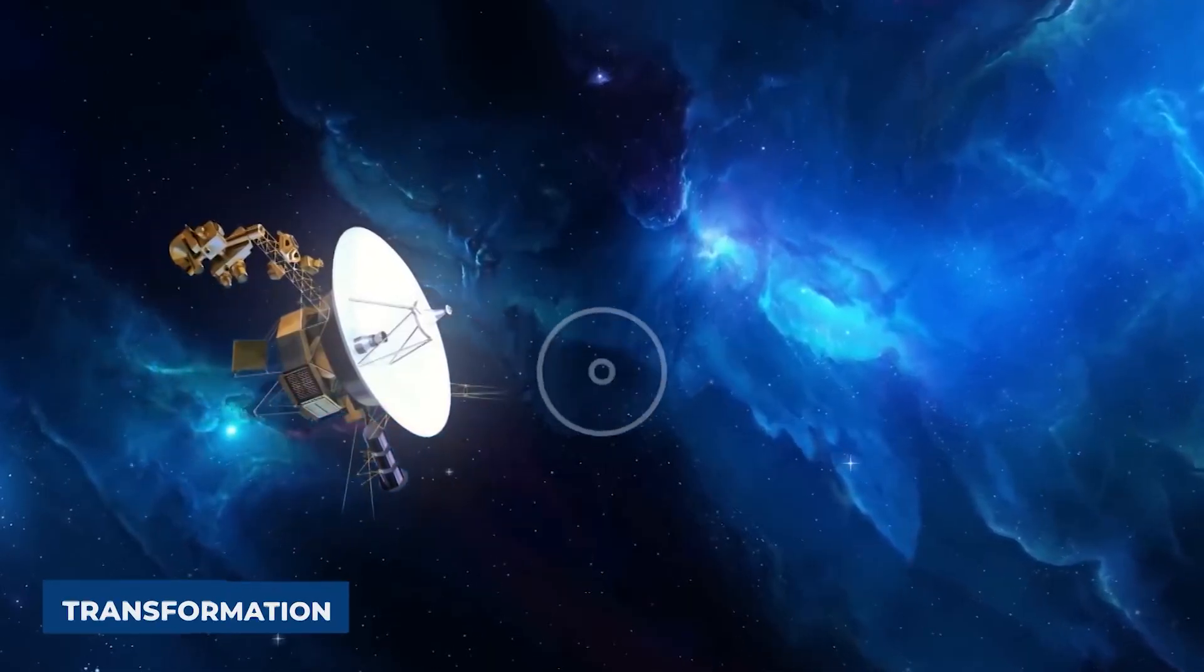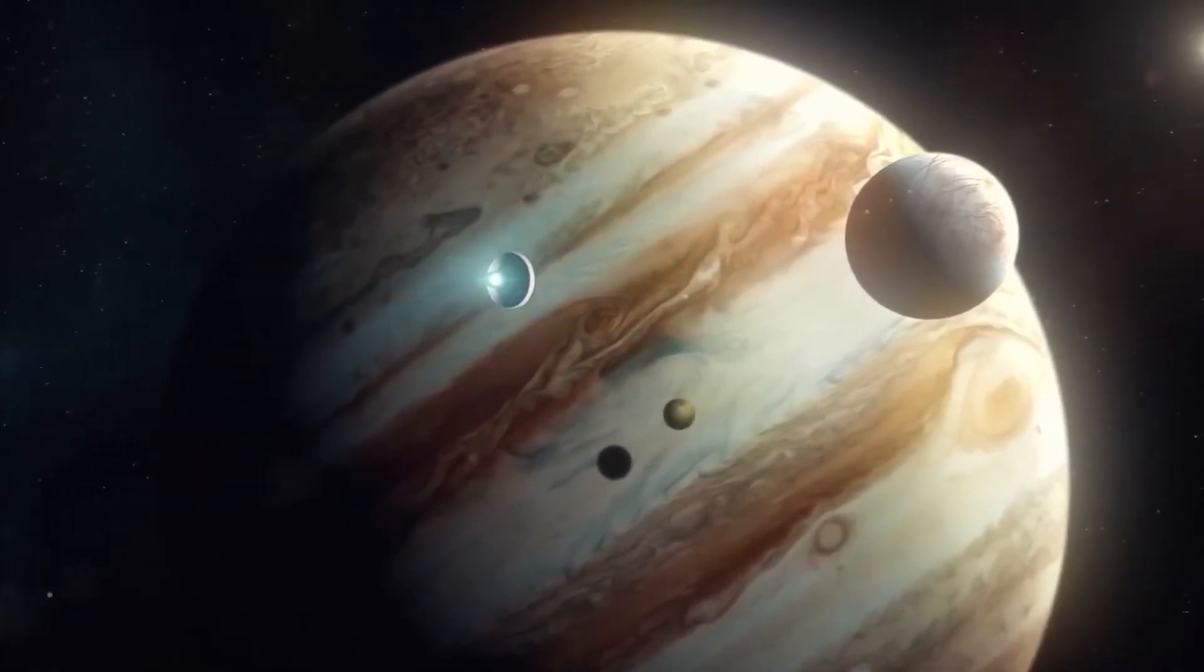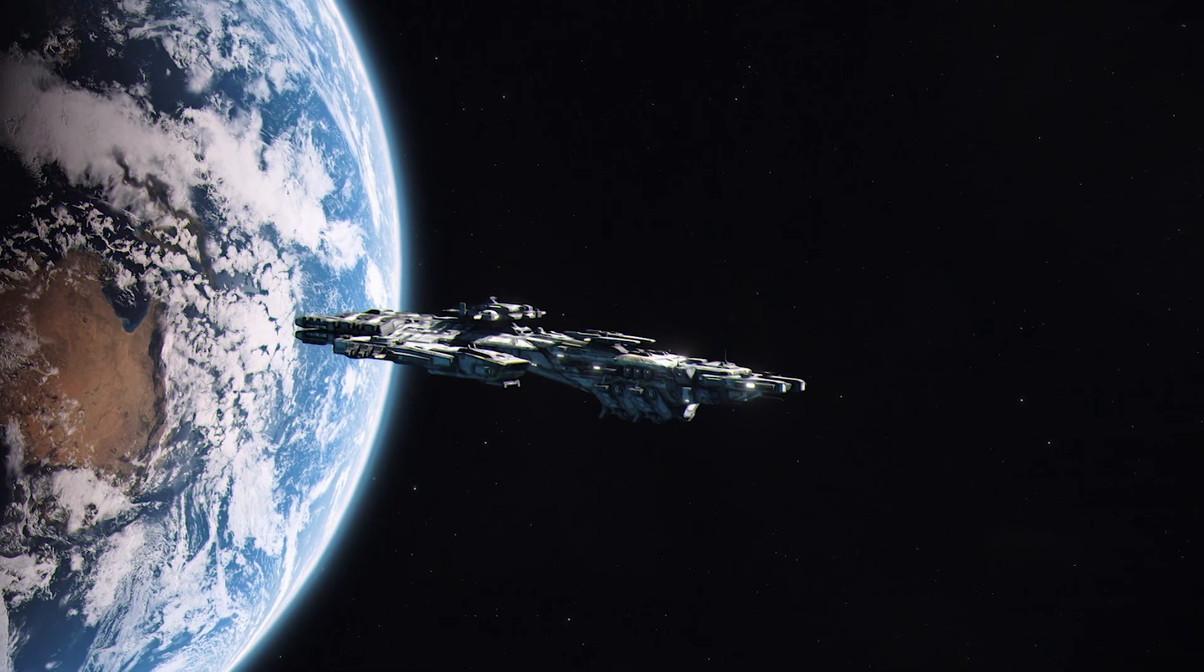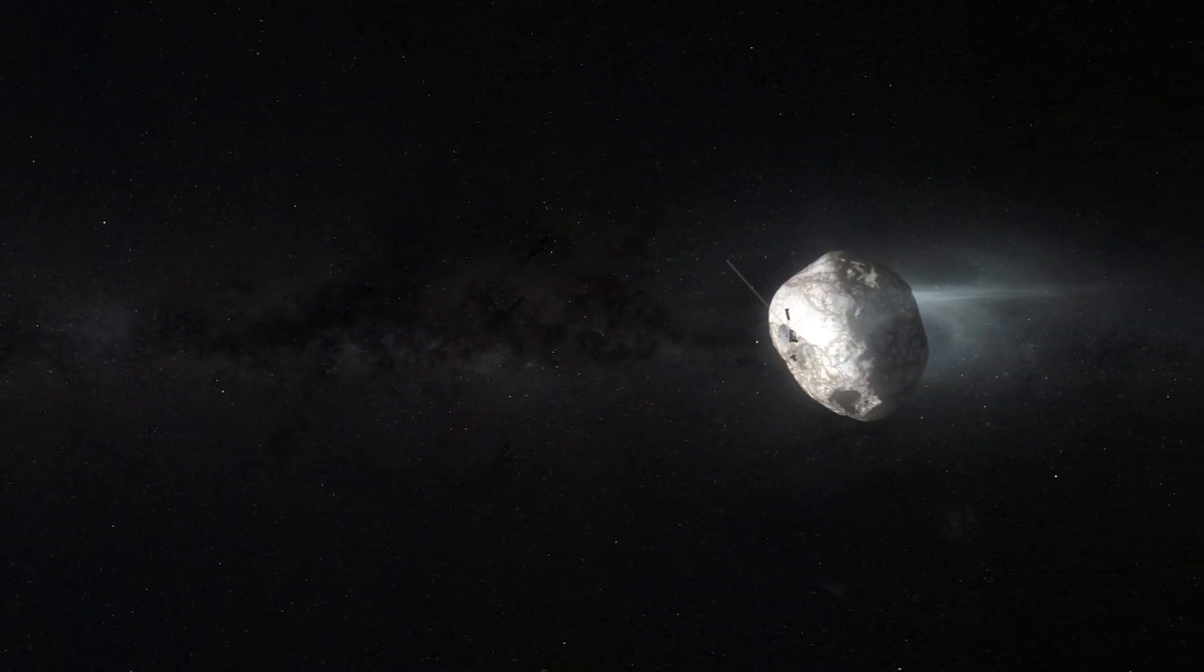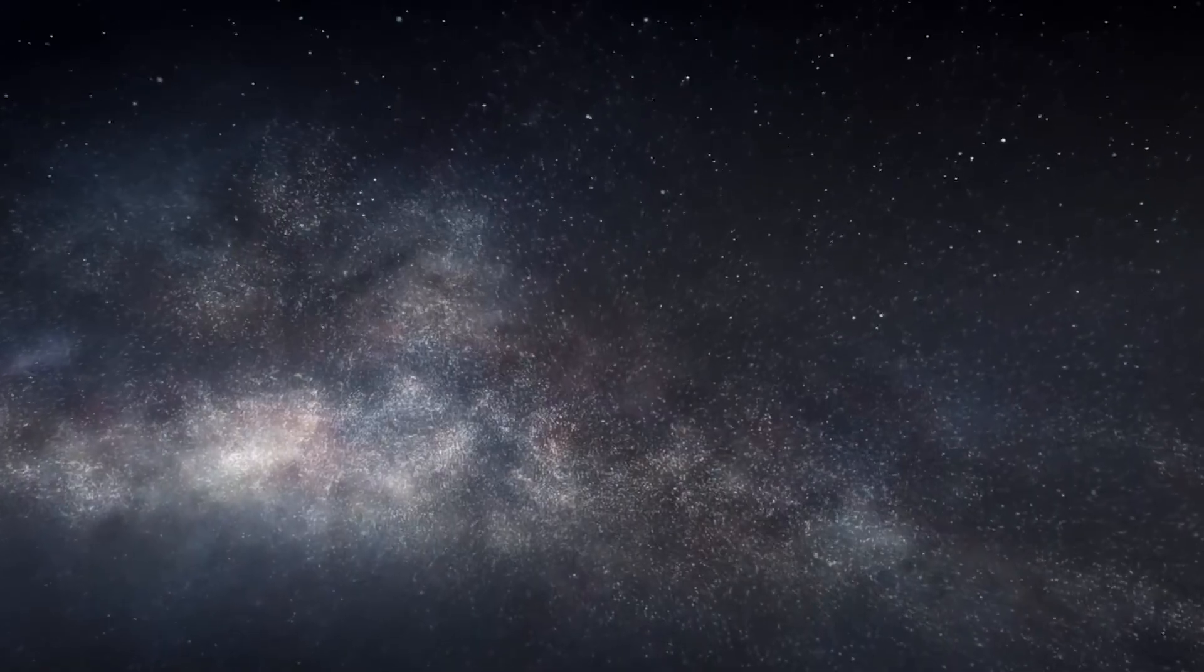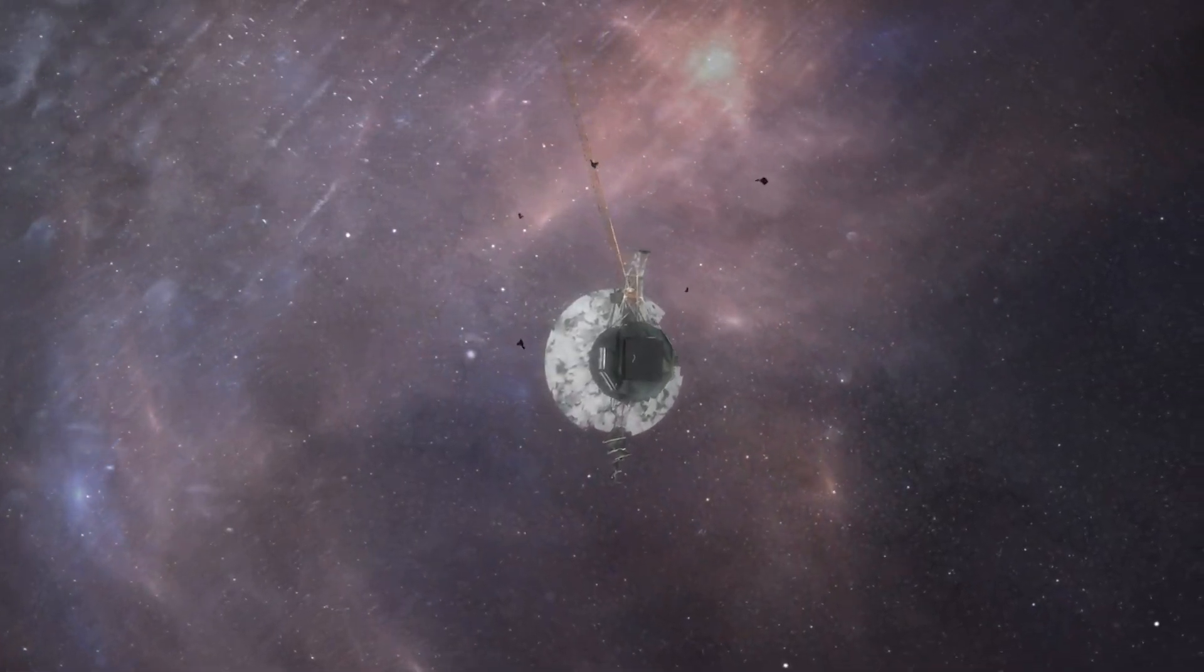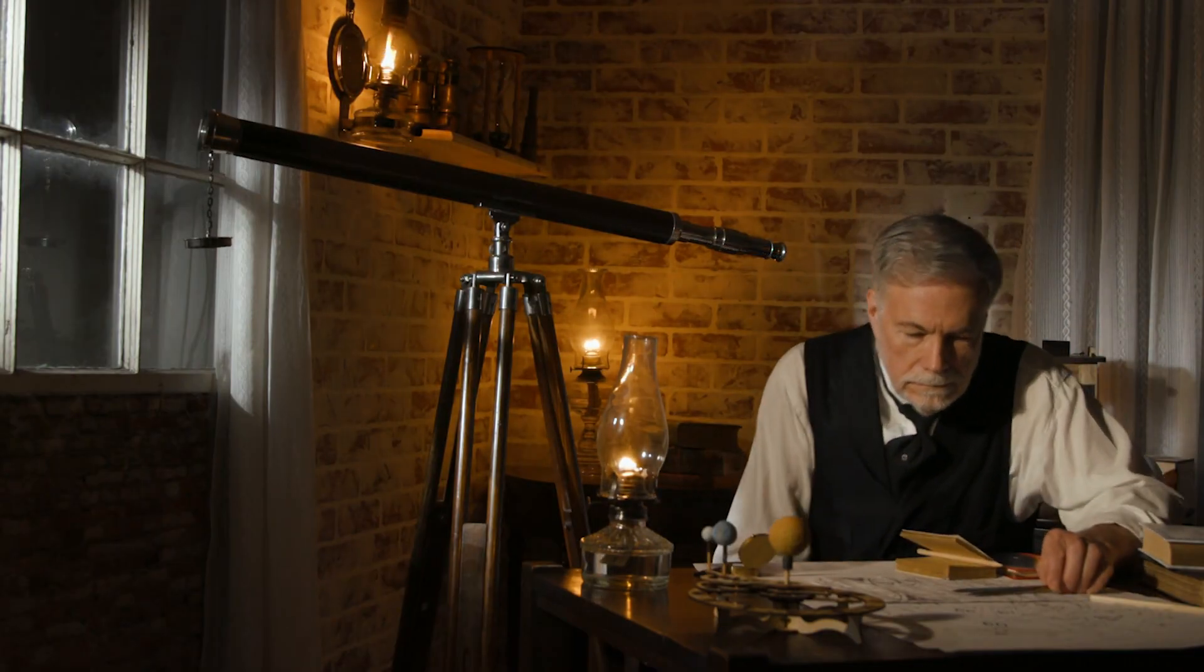Voyager 2's role in this transformation of understanding cannot be overstated. Its instruments, though built with 1970s technology, have proven not only durable, but remarkably insightful. It is as though the spacecraft, by sheer persistence and unrelenting distance, has become an oracle of deep space. Its antennae whispering truths that were inaccessible by telescope or simulation alone. The discovery also underscores the value of long-term missions. No amount of short-duration, high-budget missions could have duplicated what Voyager 2 has done simply by enduring. By continuing to move outward through an unknown realm, relentlessly recording and transmitting.